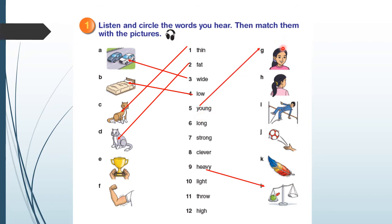Number five, young. The girl is young. Number six is long. The girl's hair is long. Number seven, strong. He is strong. Number eight, clever, is E. He won the game. He is clever. Number nine, heavy with L. The apple is heavy. Number ten, light with K. The feather is light. Number eleven, throw. He throws the ball. Number twelve, high. I can jump high with L.